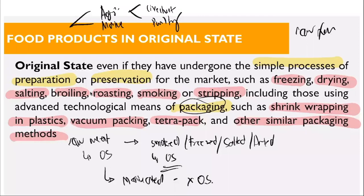A food product is in original state as long as its raw form is not altered by preparation or preservation. A product can be both prepared or preserved and packaged, as long as it still falls within the definition of original state. Once it is no longer in original state, it is subject to business tax. If it's not specifically included in the exempt preparation methods — such as marination — it is not exempt.